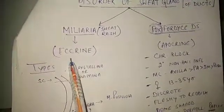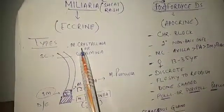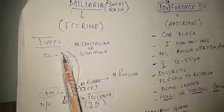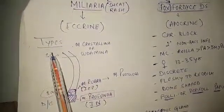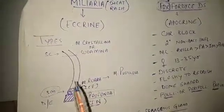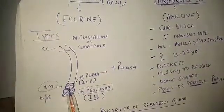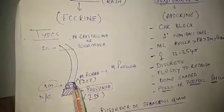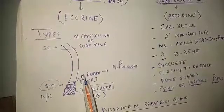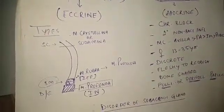Now we discuss miliaria first. Miliaria is usually seen in hot and humid conditions because of excessive sweating. It is of various types — mostly four types: miliaria crystallina, miliaria rubra, miliaria pustulosa, and miliaria profunda. When the ducts of the eccrine sweat glands get blocked in the region of the stratum corneum, the patient usually presents with tiny vesicles on the skin, and the condition is called miliaria crystallina or sudamina. When these ducts get blocked in the region of the stratum malpighii — which is the combination of stratum basale and stratum spinosum — the patient usually presents with itchy erythematous papules, and this condition is called miliaria rubra. When it gets infected and inflamed, it is converted into miliaria pustulosa.